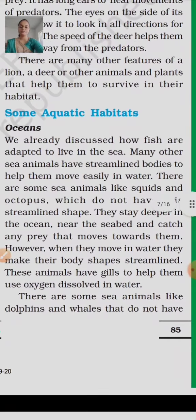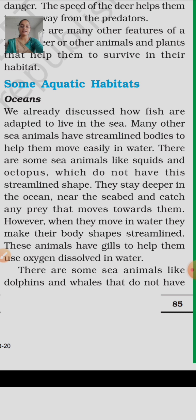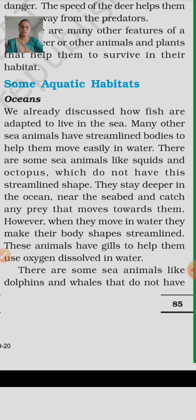Let's start with the ocean. We have already discussed how fishes are adapted to live in the sea. Many other sea animals have a streamlined body to help them move easily in water. There are some sea animals like squids and octopus which do not have a streamlined shape. If you have seen a starfish, it is star-shaped — it is not streamlined. An octopus is also not streamlined.